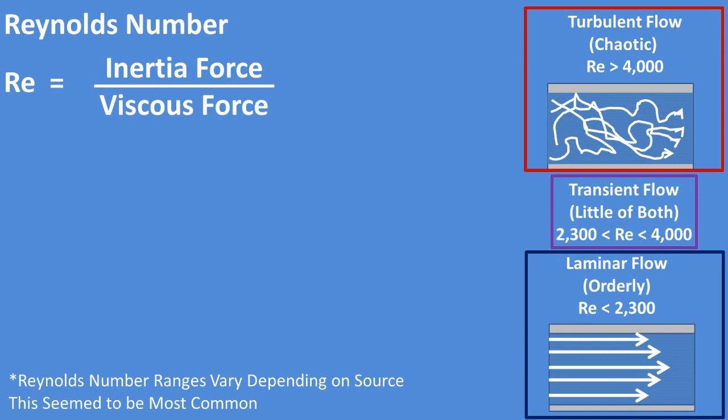Which allows us to compare to tested amounts to determine if the Reynolds number is laminar, transient, or turbulent. If the Reynolds number is below 2,300 it is laminar. If the Reynolds number is between 2,300 to 4,000 it is transient. If the Reynolds number is 4,000 or above it is turbulent.